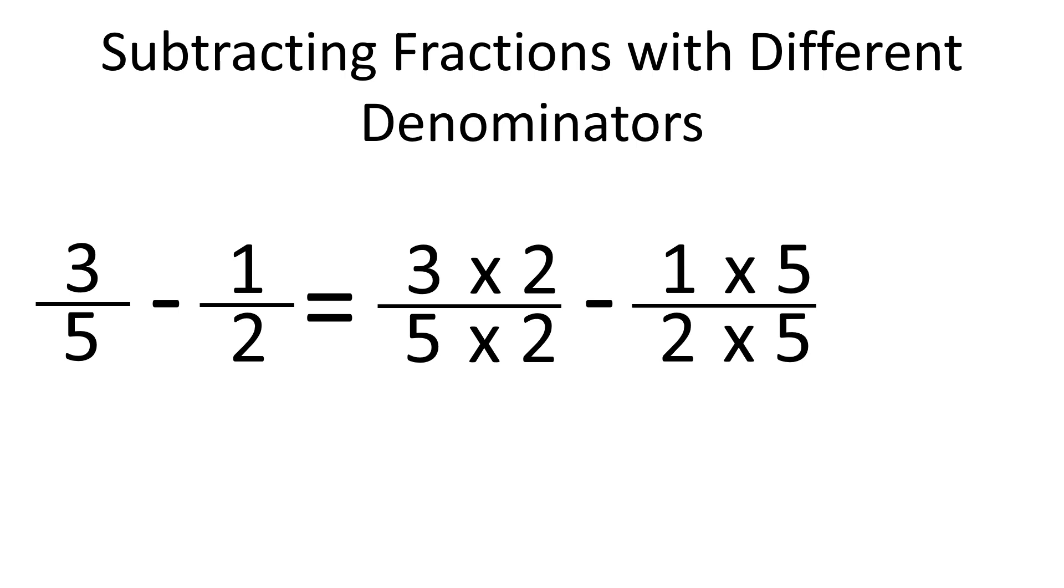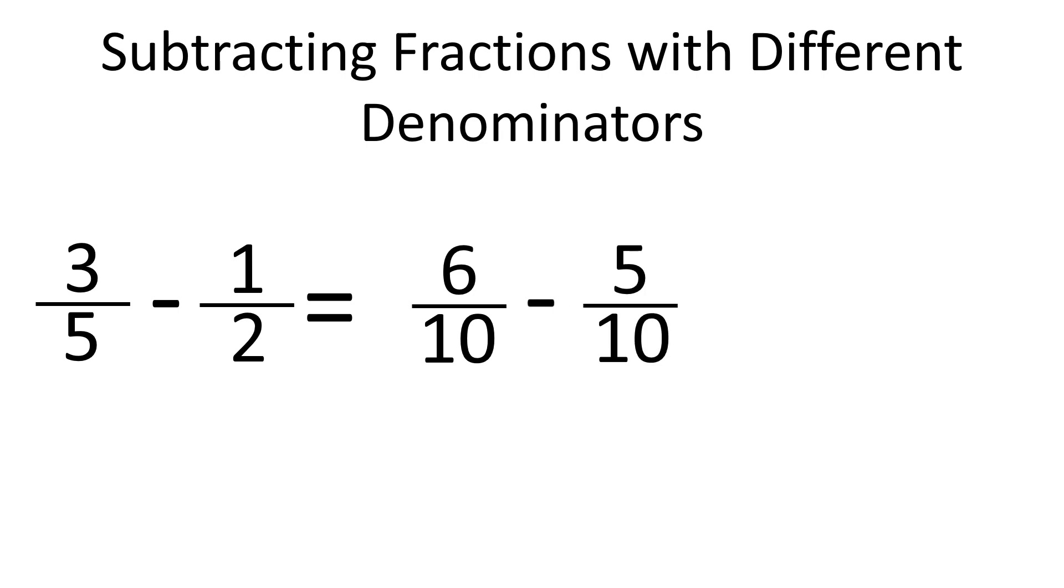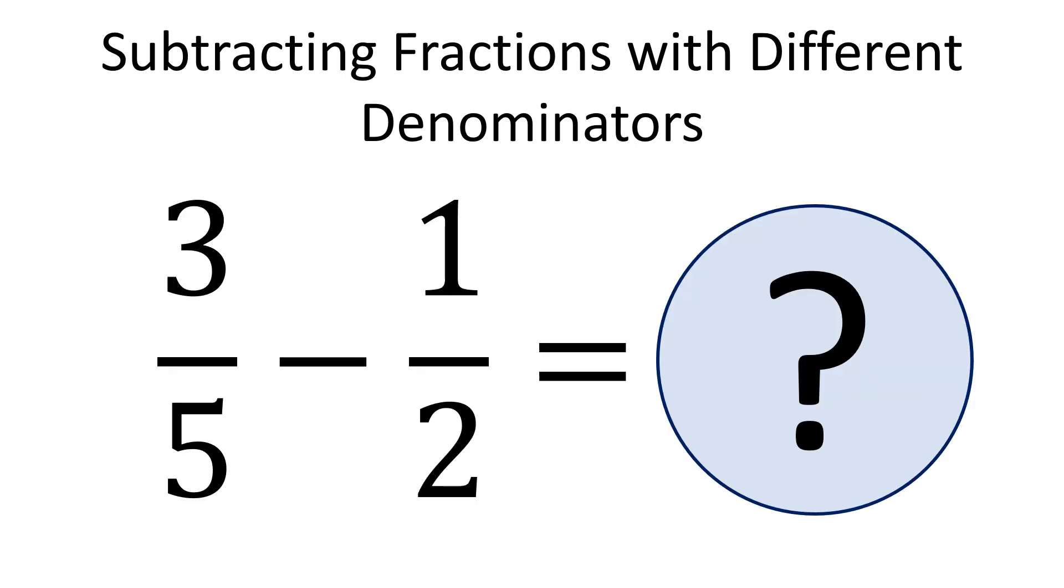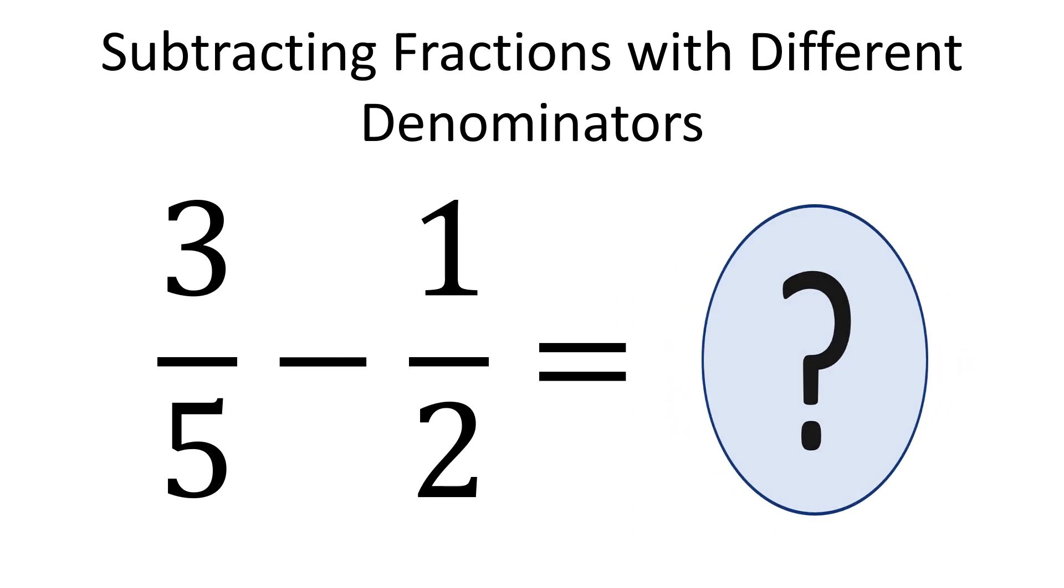To do that, we have to multiply the denominator and the numerator in the first fraction by 2 and in the second fraction we have to multiply the denominator and the numerator by 5. Thus we have 6 tenths minus 5 tenths and that equals 1 tenth as we only subtract the numerators. So 3 fifths minus 1 half equals 1 tenth.